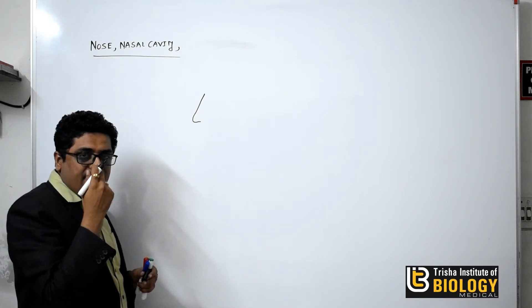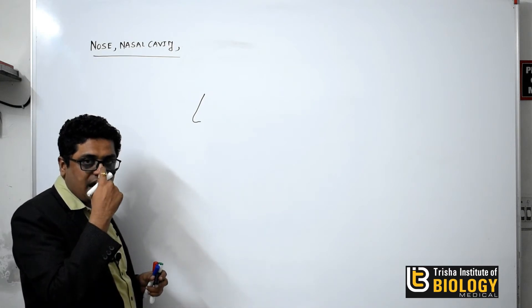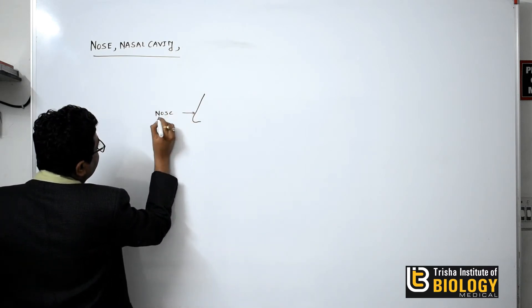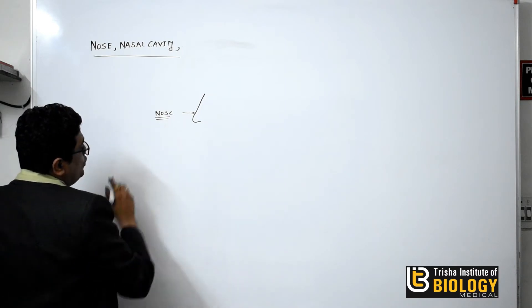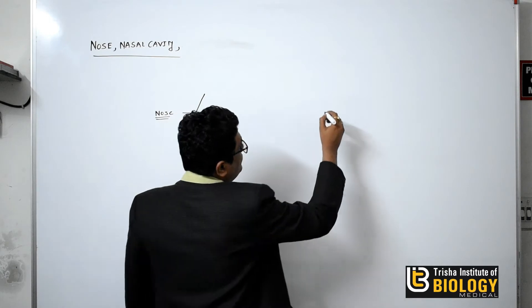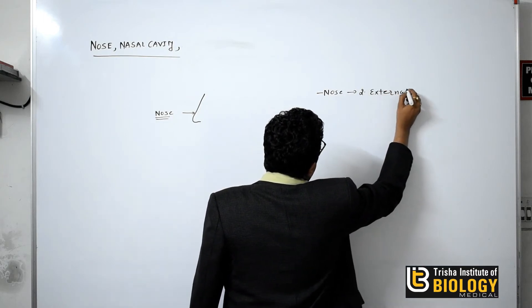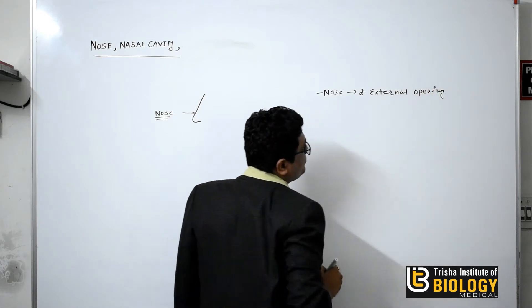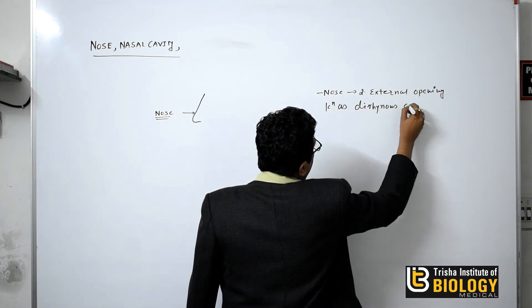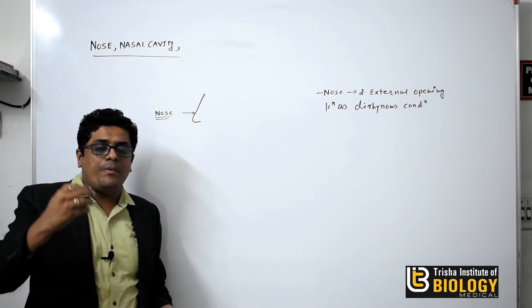We all know that in humans the nose is jutting outside the face. The nose possesses the nasal cavity, and this nasal cavity is divided into two chambers with the help of a cartilage known as the septal cartilage. In humans there are two external openings, so this is known as the dirhinus condition.